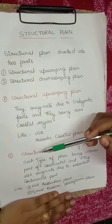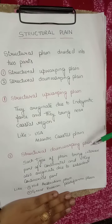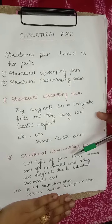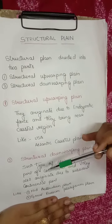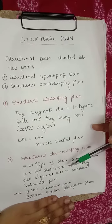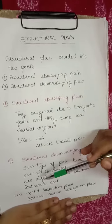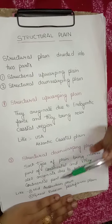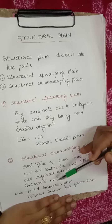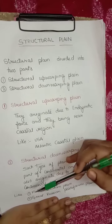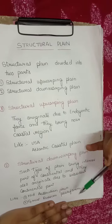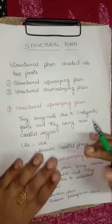Second, structurally downwarping plains. Such type of plains form in the interior part of continents and they also originate due to subsidence of the continental part, like the mid-Australian plain and the great Russian platform plain.